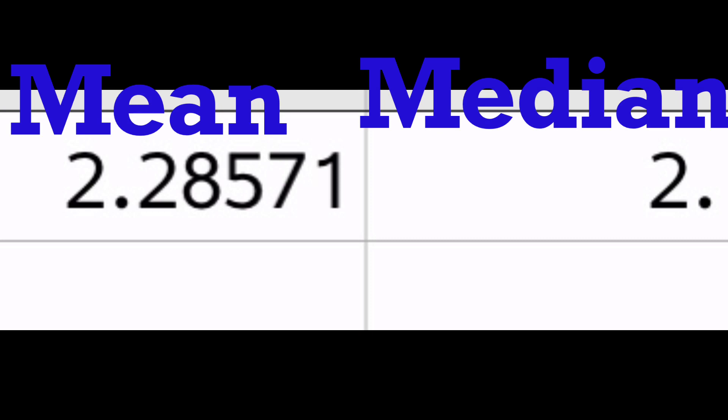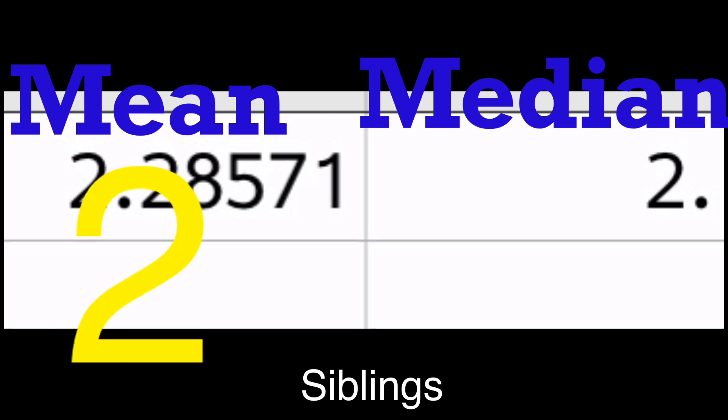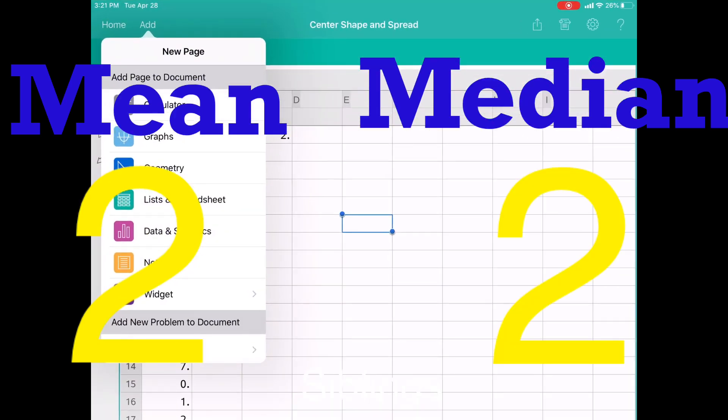Here are the mean and median of the set of data from the spreadsheet. Since we are referring to siblings, which are people, you cannot have part of a person, so we will use two for the mean, which in turn will make our mean and median equal.